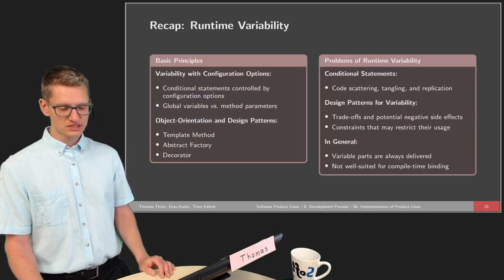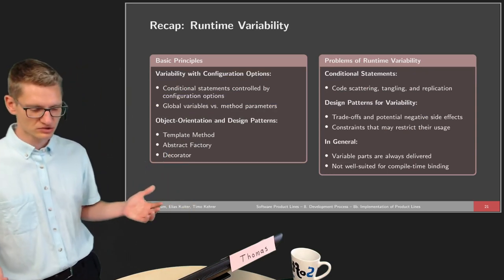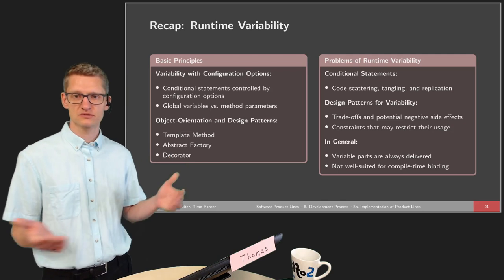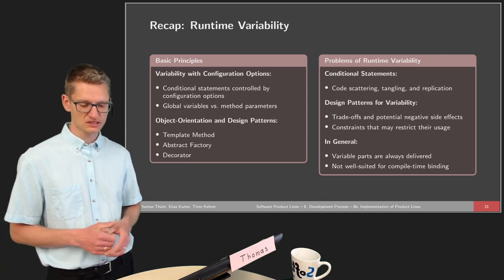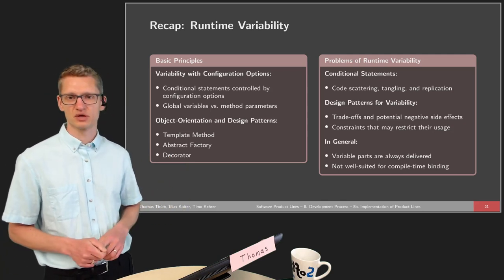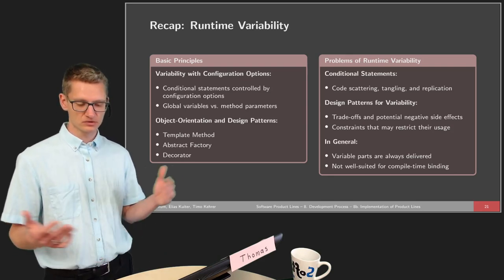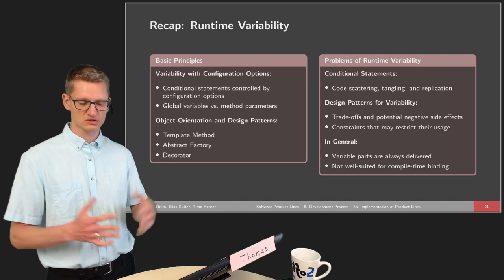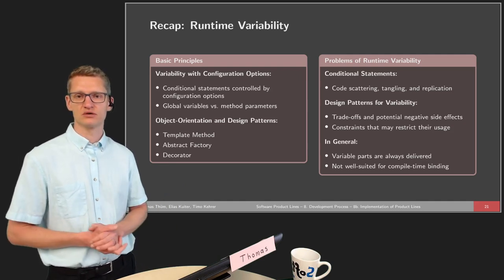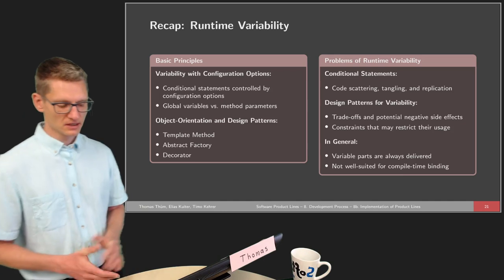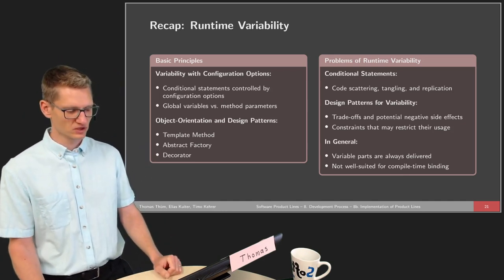The basic principles of runtime variability are: we have conditional statements controlled by configuration options provided by different techniques, and we use global variables or method parameters to propagate those values during implementation. We also talked about different design patterns in object orientation and how they can be used to support those basic principles of runtime variability.